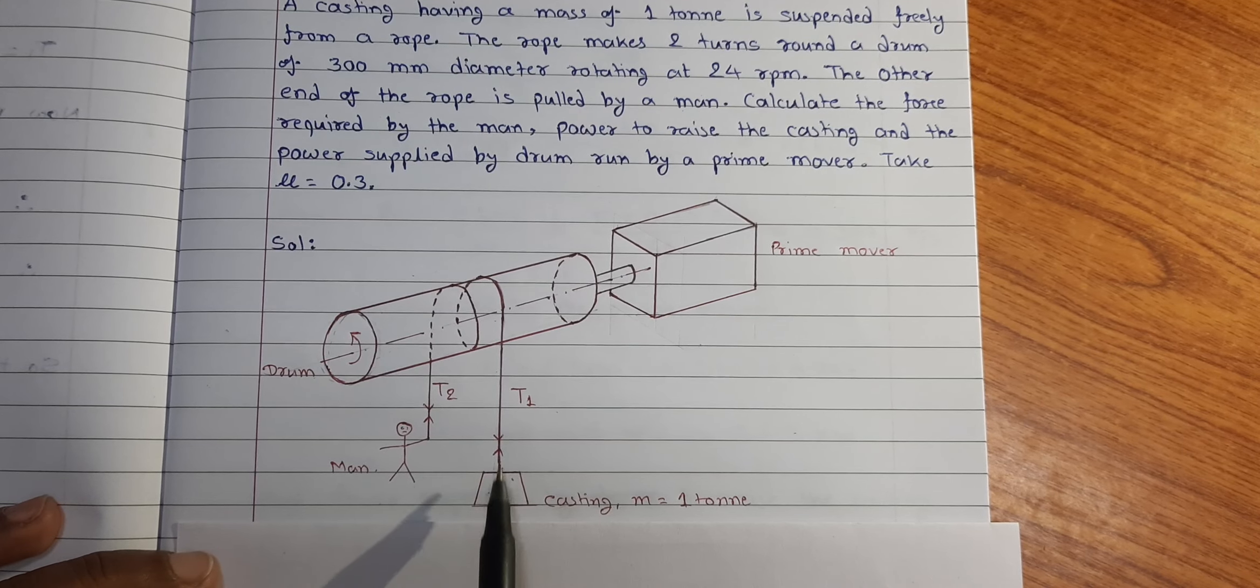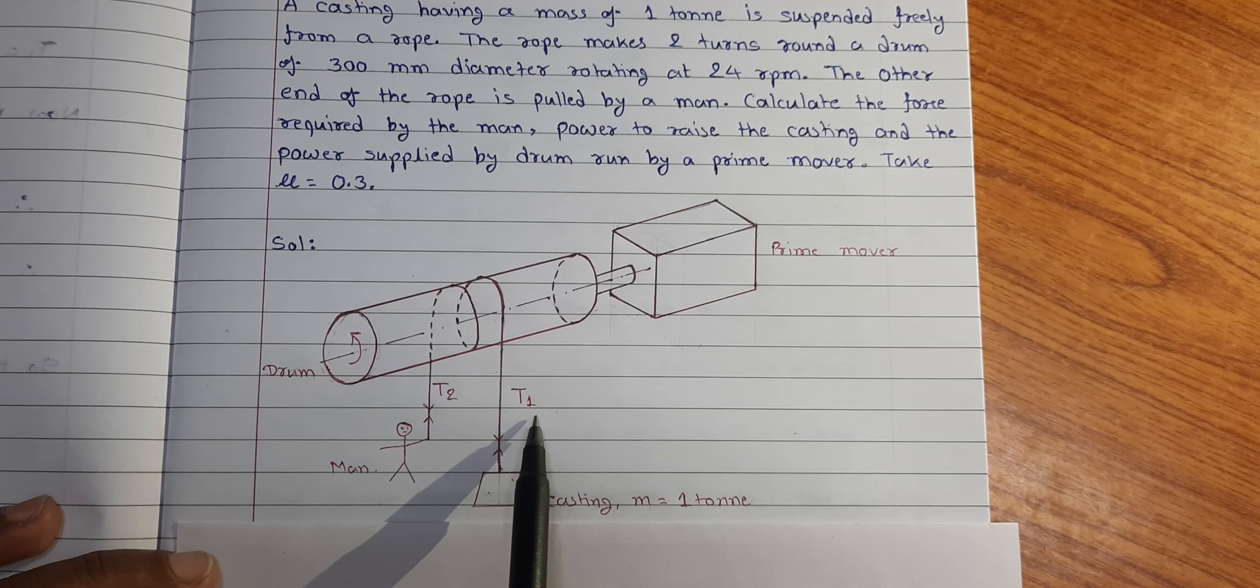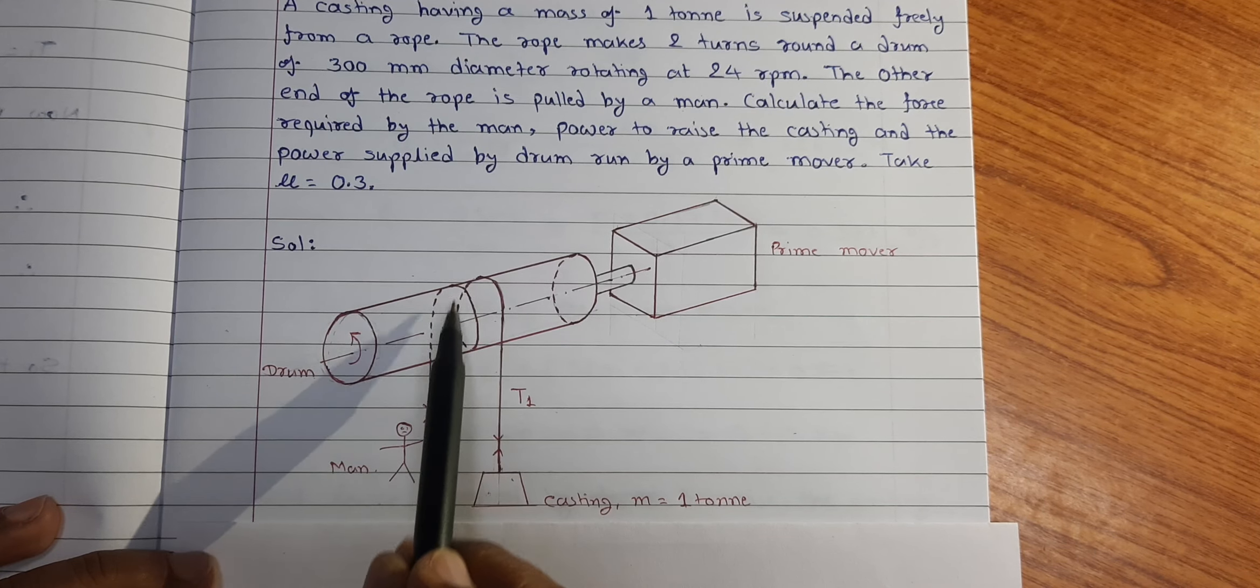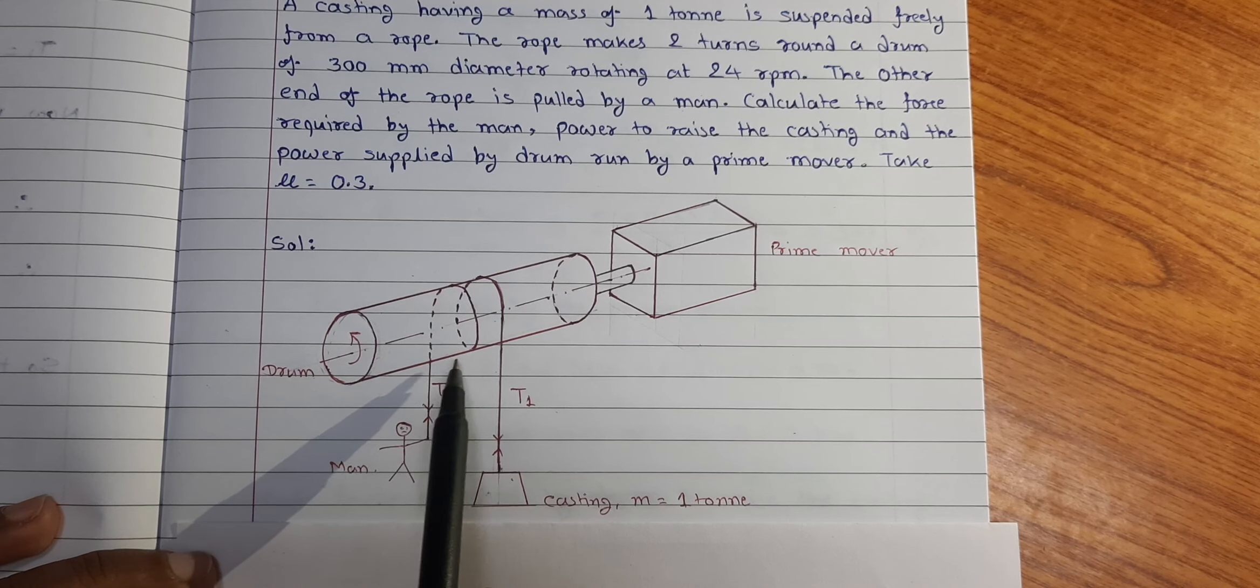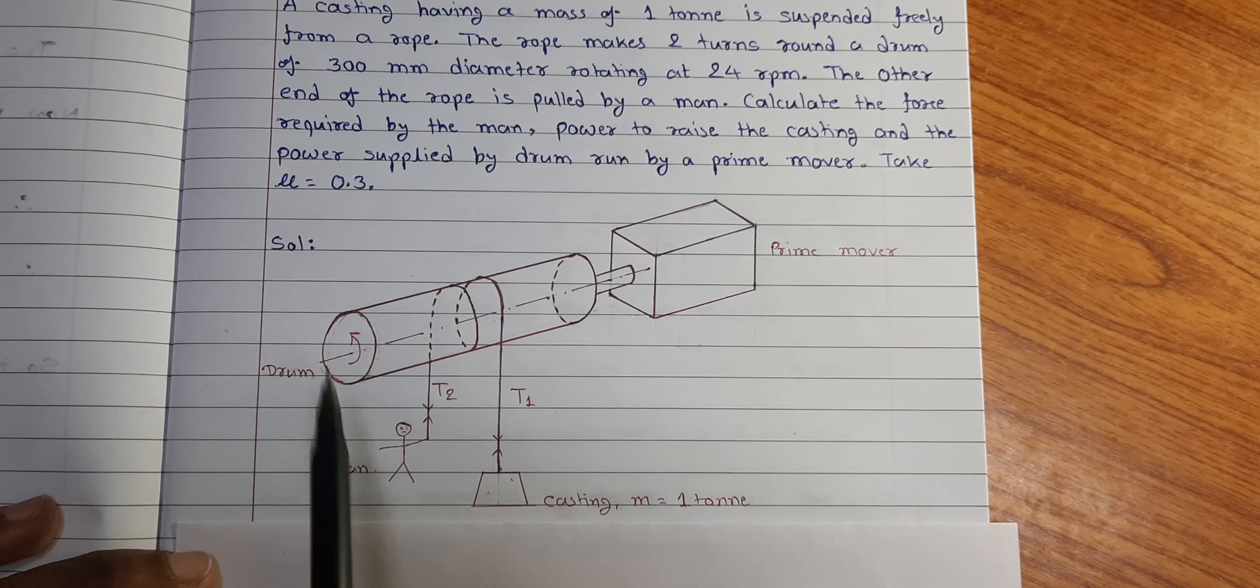As the casting is raised, so the rope end connected to the casting will be a tight side and as the rope is makes 2 turns, so the angle of lap will be 2 circular periphery of the drum.